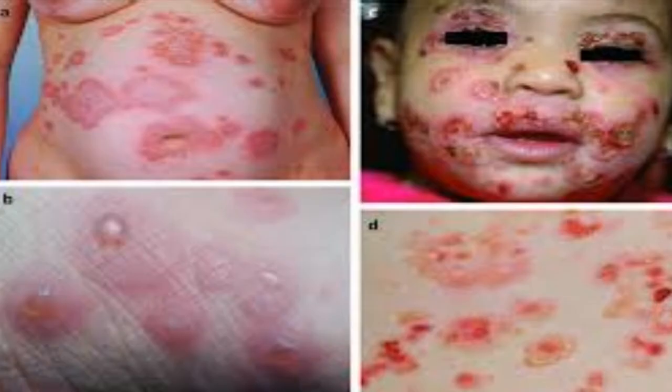Amyloid bullae are non-inflammatory, subepidermal bullae that may be seen sometimes in amyloidosis. The surrounding dermis shows deposition of amyloid.